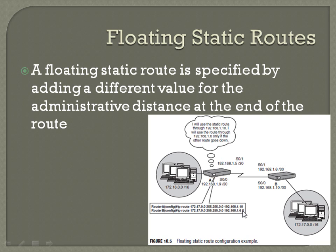So it's like a secondary route, basically. Yeah — if you're setting a static route somewhere and you've got a redundant link, but you want to prefer one over the other, it's a way of having a backup route in case that first link goes down for some reason.